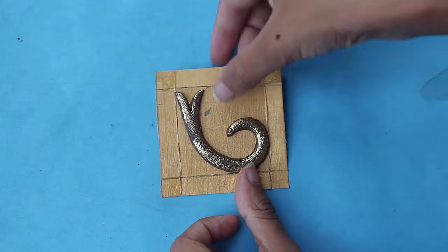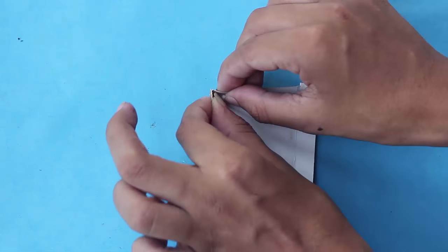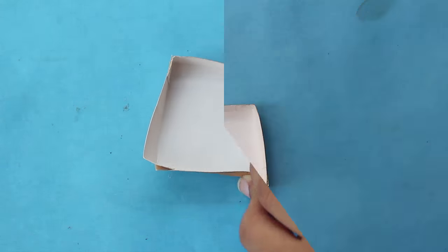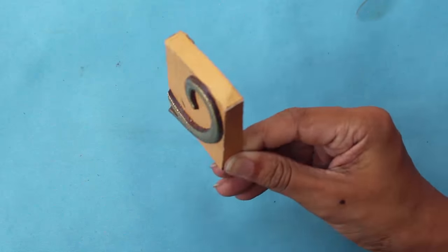Invert your model and then stick it as shown. This will become the lid of your box. Now cut out a strip from the wedding card and stick it on the lid.